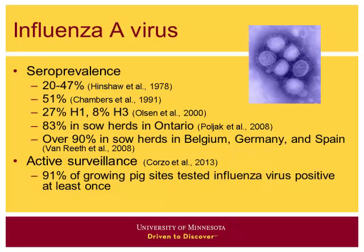Seroprevalence from the late 1970s to early 2000s ranged from about 20 to 50 percent, with variability depending on region. There was also fairly high herd-level seroprevalence outside the United States. One more recent active surveillance study looking at prevalence in growing pig herds found that 91% of those sites tested influenza virus positive at least once over a one-to-two year sampling period. The major focus of today's presentation, however, will be on weaning age pigs and sow farms.